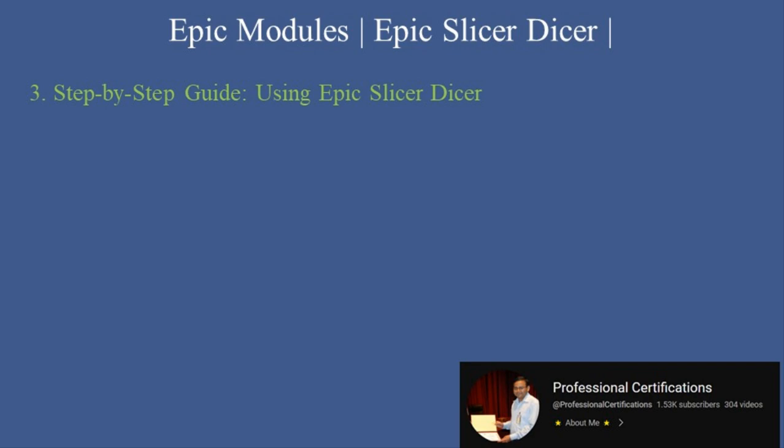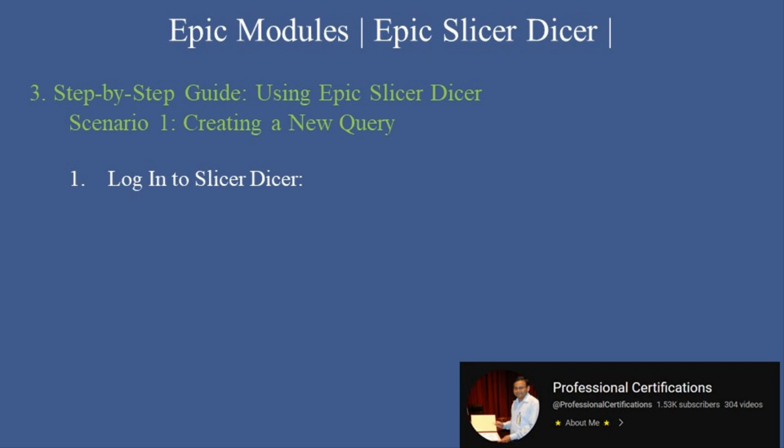Step-by-step guide — using Epic Slicer Dicer. Scenario 1: Creating a new query. Step 1, log into Slicer Dicer — access Slicer Dicer from Epic Hyperspace and select the module from the menu. Step 2, choose a dataset — select a dataset such as patient encounters, medication usage, or procedure volumes.